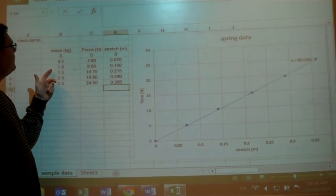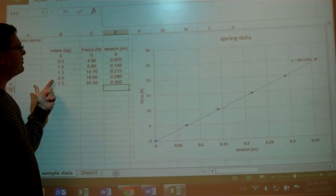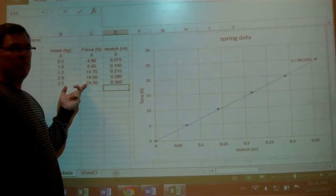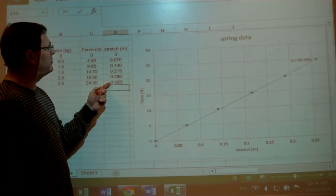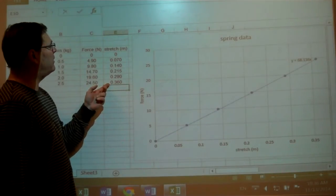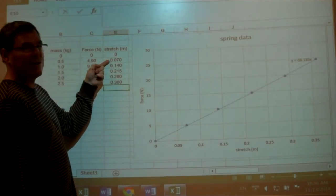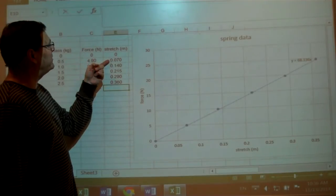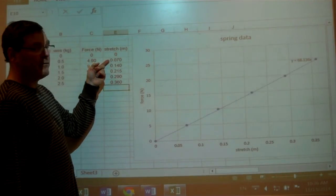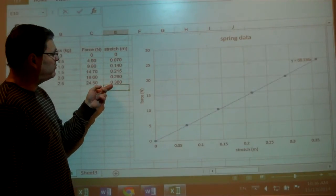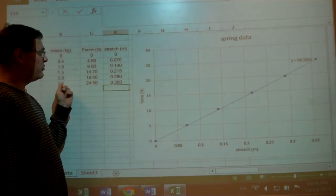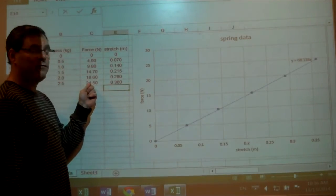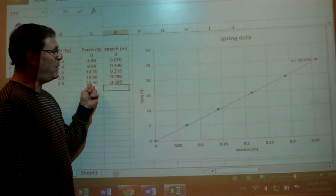So in this left column is the amount of mass stretching the spring. I've converted that to weight in newtons. And I've measured in meters the stretch of the spring. So 0.07, 7 centimeters or 0.07 meters for 500 grams, all the way up to a stretch of 36 centimeters or 0.36 meters for 2.5 kilograms or 24.5 newtons of weight.